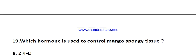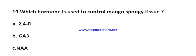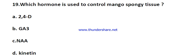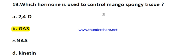Question number nineteen: which hormone is used to control mango spongy tissue? The options are 2,4-D, GA3, NAA, and kinetin. The right answer is GA3. To eliminate mango spongy tissue, we generally use GA3 at the rate of 50 ppm.